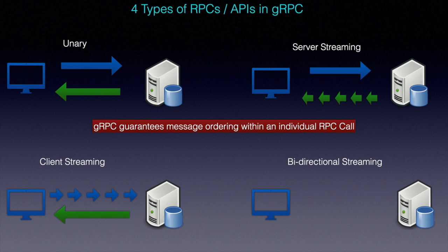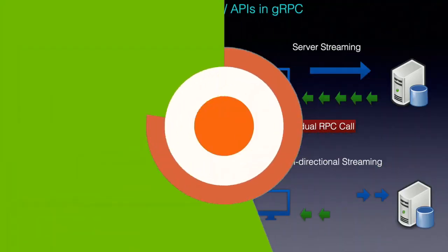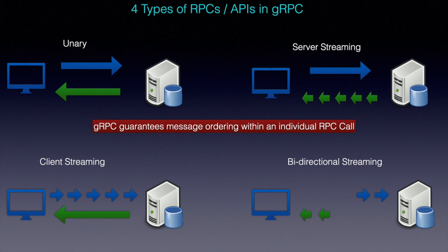Bi-directional streaming is a completely new concept in the API world. In this case both client and server send a sequence of messages using read and write streams. The two streams operate independently, so clients and servers can read and write in whatever order they like. For example, the server could wait to receive all messages from the client before writing its responses, or it could alternately read a message then write a message, or use some other combination of reads and writes. The order of messages within each stream is preserved.